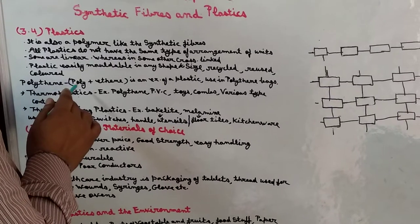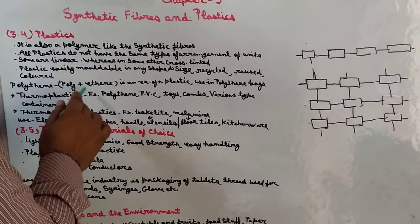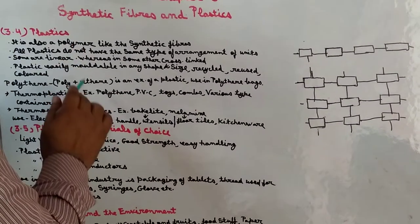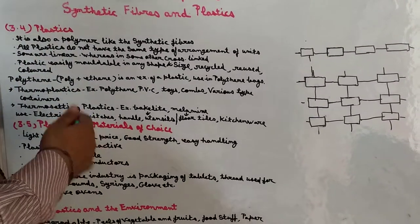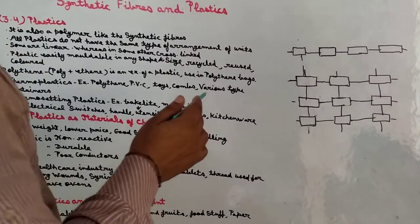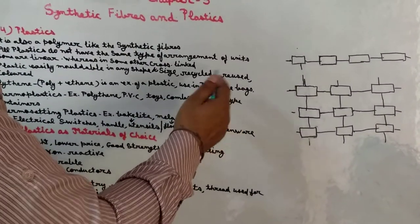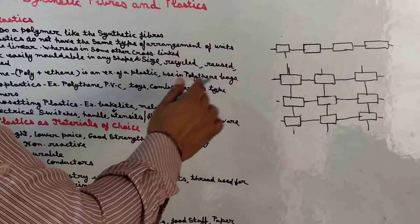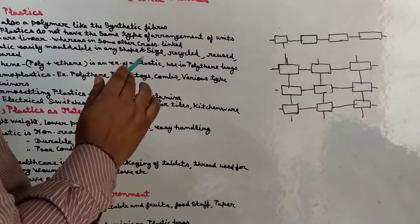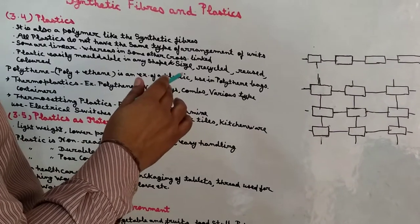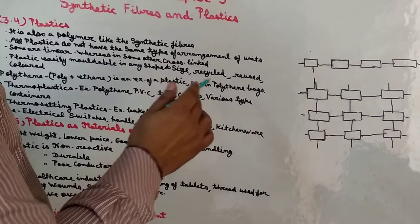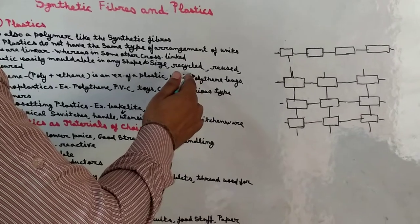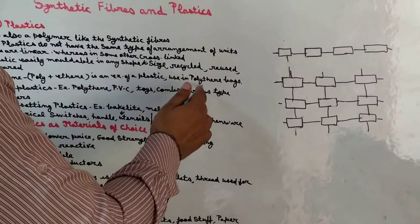Example है polythene — यह दो शब्दों से मिलकर बना है: poly + ethene. Poly means many, ethene एक chemical substance है. Shopping के लिए जाते हैं तो polythene bag में सामान लेकर आते हैं — यह plastic का एक example है. हालाँकि polythene bag पर government ने कई बार ban लगाए हैं क्योंकि यह pollution का कारण है. कई बार animals की alimentary canal block हो जाती है.